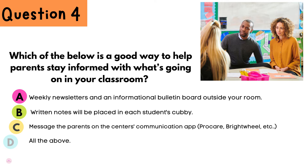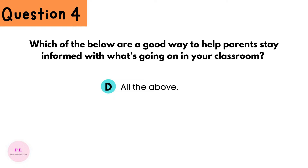Question 4: Which of the following is a good way to help parents stay informed about what's going on in your classroom? A, weekly newsletters and an informational bulletin board outside your room; B, written notes placed in each student's cubby; C, message parents on the center's communication app such as Brightwheel or ProCare; D, all of the above. The answer is D — all of the above.